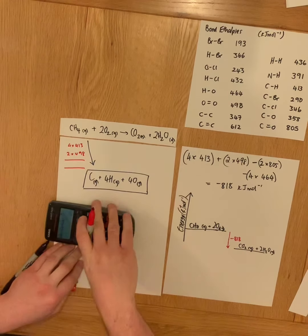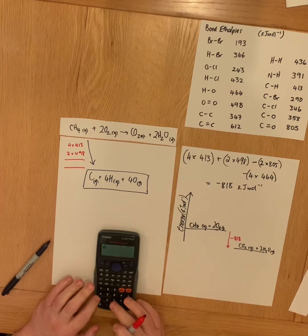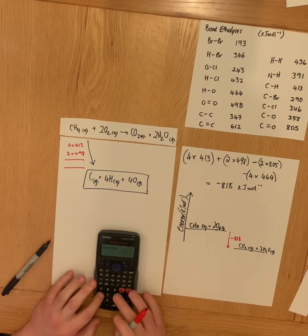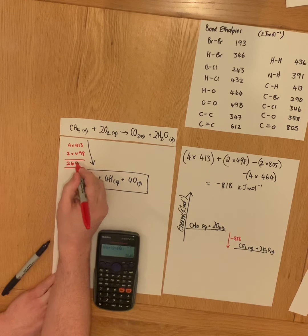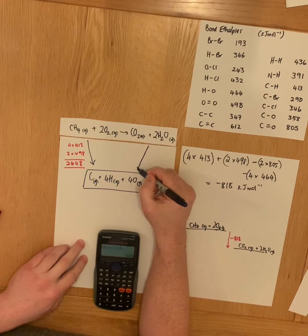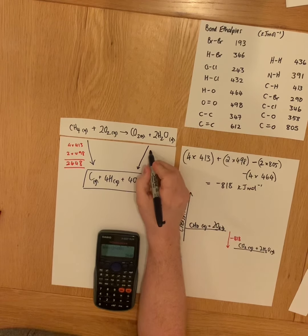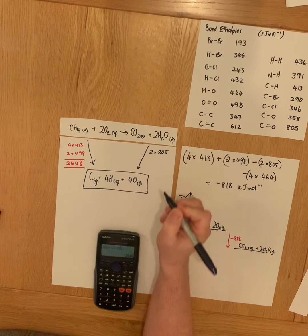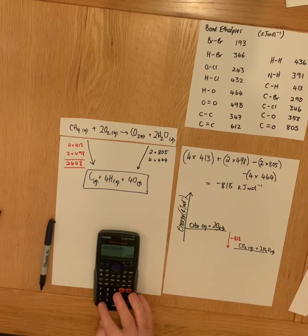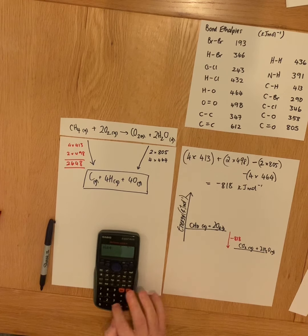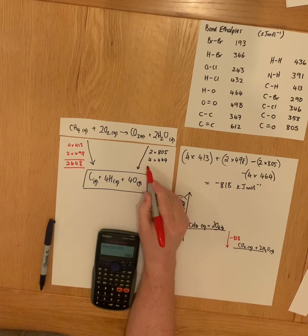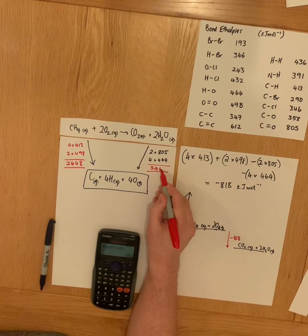So the sum of the bond enthalpies of the reactants is 2648 kilojoules per mole. We can do the same principle for the bond enthalpies of our products. And again we've got 2 lots of 805 for the carbon-oxygen double bonds and 4 lots of 464 for each of the O-H bonds.